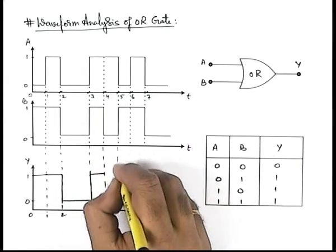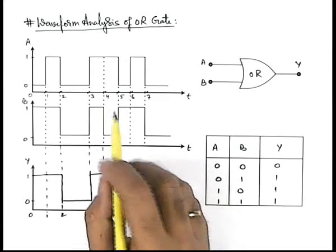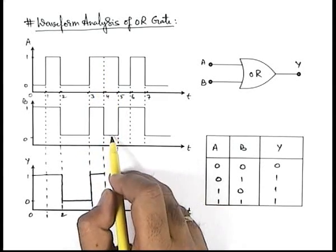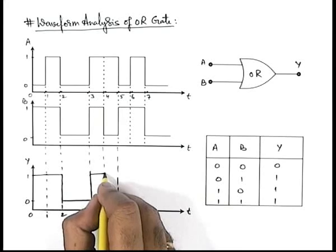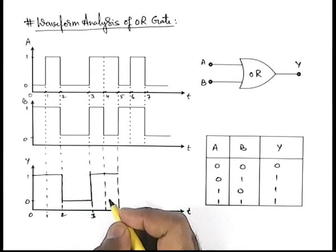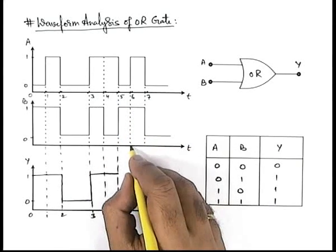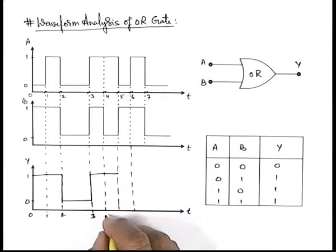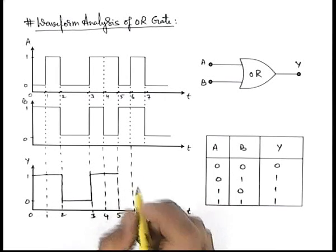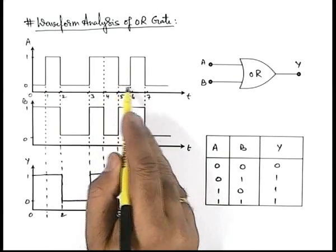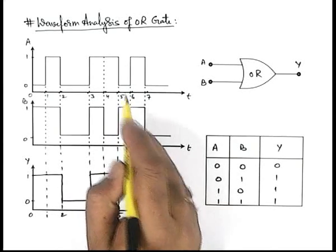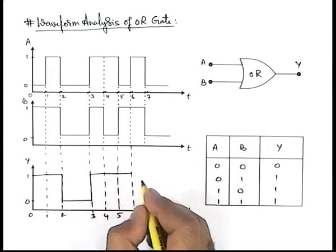Now from three to four we can see signal A is in state one but B is in state zero, but either of the two is one the output will be one. Further we can see from the instant five to six, signal A toggles to state zero but B becomes one, so either of the two is one this will remain one.